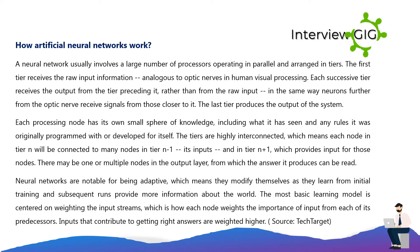How do artificial neural networks work? A neural network usually involves a large number of processors operating in parallel, arranged in tiers. The first tier receives the raw input information, analogous to optic nerves in human visual processing. Each successive tier receives the output from the preceding tier rather than from the raw input, in the same way neurons further from the optic nerve receive signals from those closer to it. The tiers are highly interconnected, meaning each node in tier N is connected to many nodes in tier N-1 (its inputs) and in tier N+1.